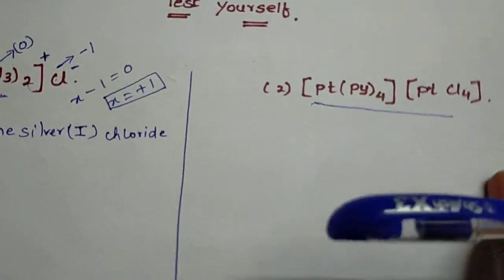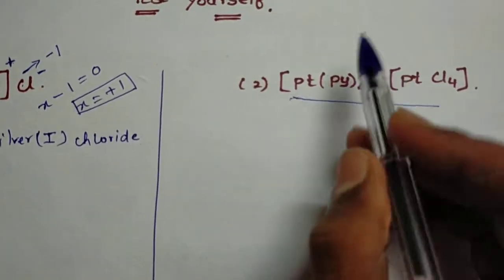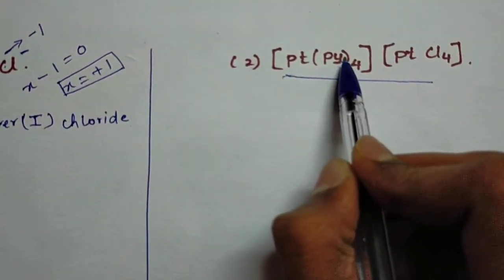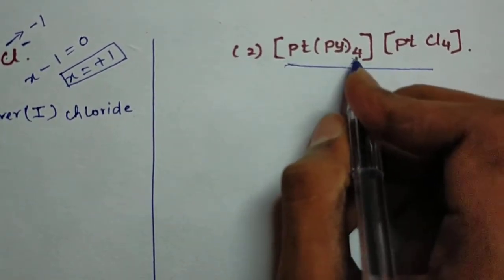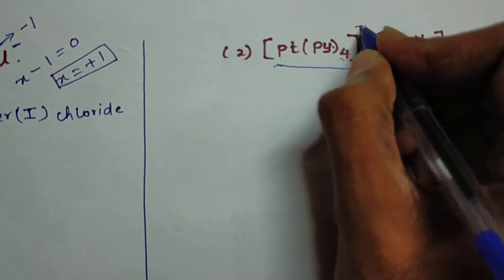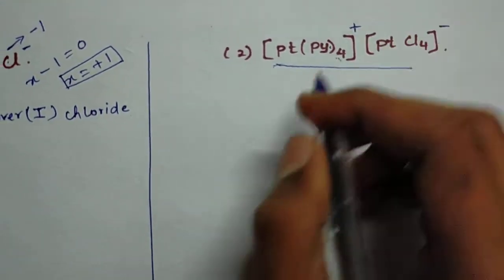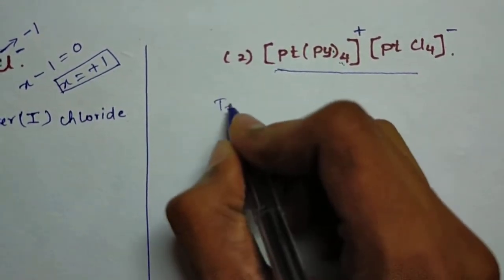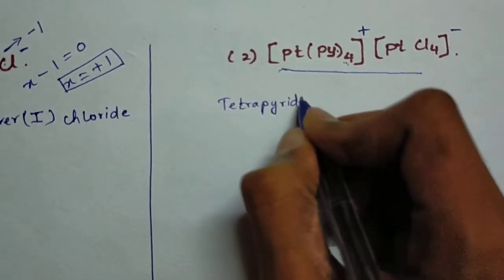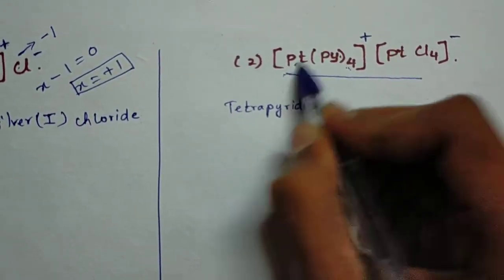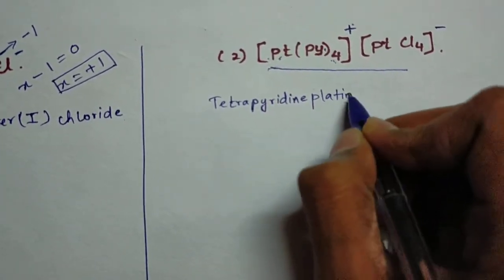Coming to the second complex: [Pt(py)4][PtCl4]. The ligand name is pyridine. With four ligands it is tetrapyridine. The first part is a positive cation complex and the second is an anion complex. The central metal is platinum, so we have tetrapyridineplatinum for the cation.